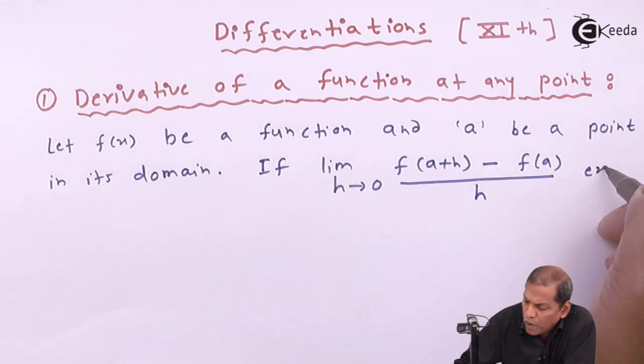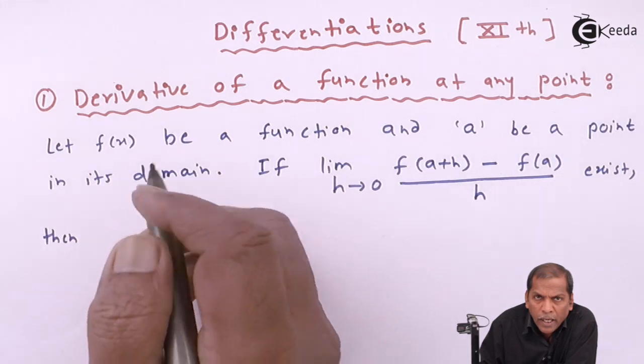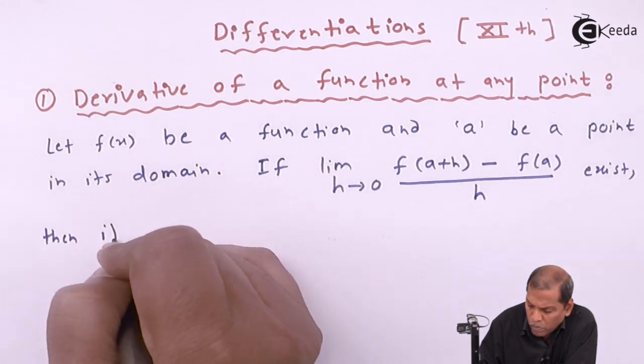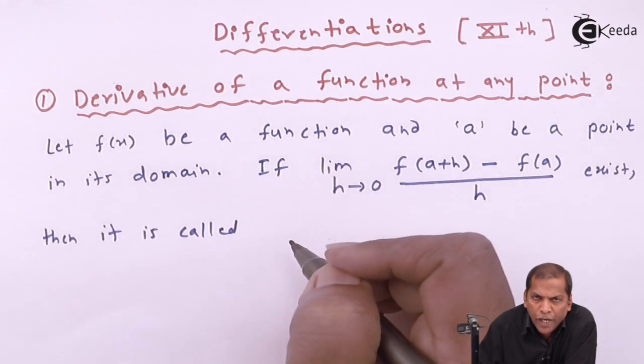exists, then it is called derivative of f(x) with respect to x at point 'a'